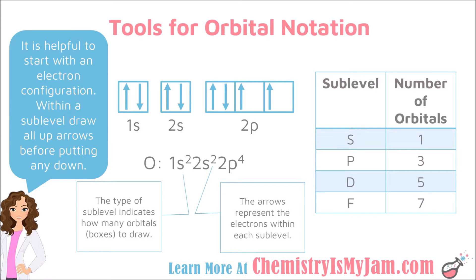Now that we have seen some of the details about orbital notation, let's take a look at some of the tools you have when you need to write one. First, it is important to know the number of orbitals in each sublevel. An s sublevel always has one orbital. A p sublevel always has three orbitals. D should always have five, and f should always have seven. This is a key piece of information that you need when writing an orbital notation.